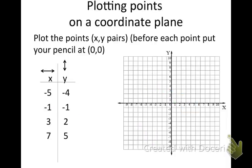The next thing I want us to look at is: given x-y values, I want you to plot them. When I give you the x-value, you go left or right — negative means go left, positive means go right. When I give you the y-value, you go up or down. You always start at 0. So for the first point (-5, -4), I start at 0, go left 5, then down 4. I put a nice big point there — I don't draw the lines.